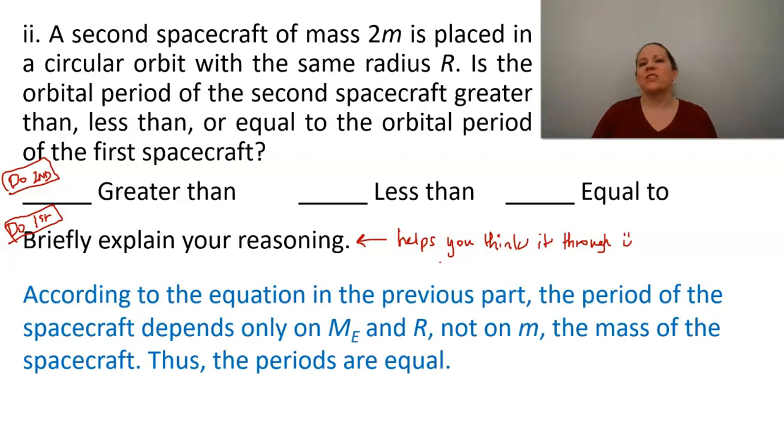So here would be the reasoning for this. According to the equation in the previous part, the period of the spacecraft depends only on m, e, and r, not on m, the mass of the spacecraft. Thus, the periods are equal.